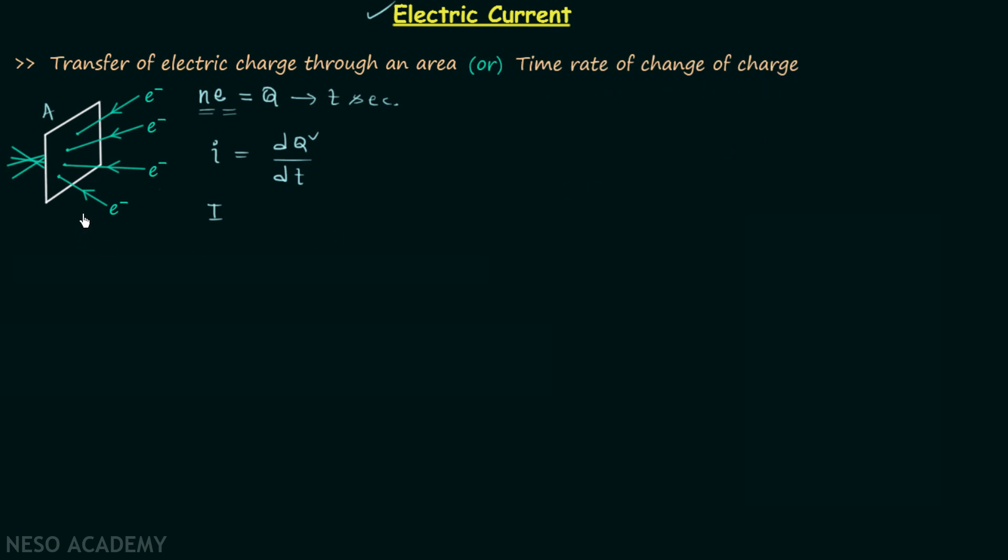In the case of electric circuits, the electric charge is usually carried by electrons. The electric charge can also be carried by ions but not by atoms. In some cases, like plasma, the electric charge is carried by both electrons and ions.